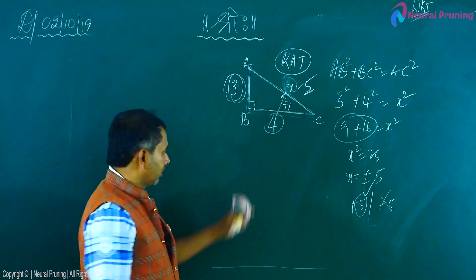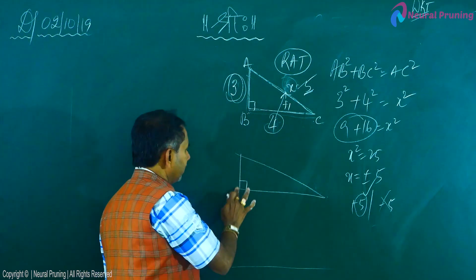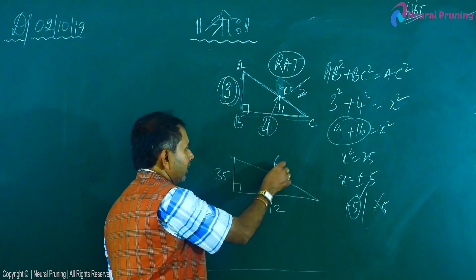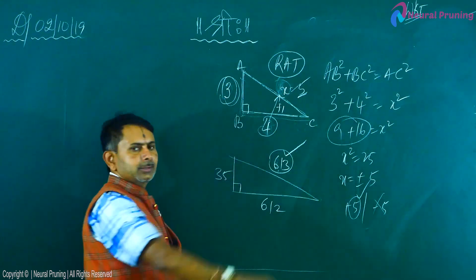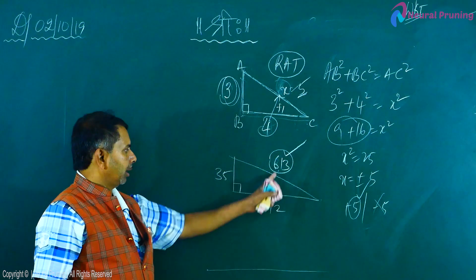Had I not told you this technique, probably this question is one of the popular questions in CET. If this is thirty-five, this is six hundred and twelve. What is this? It is what? Six hundred and thirteen. You can check. Why? Because this is odd number. Add one to this. Finished.